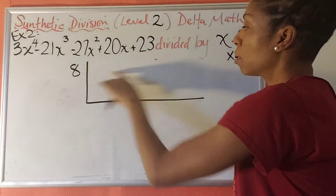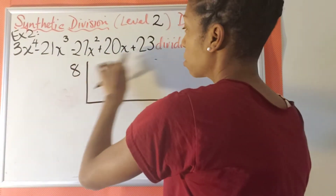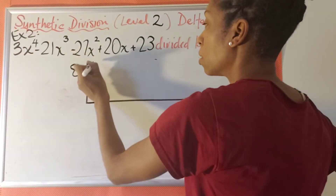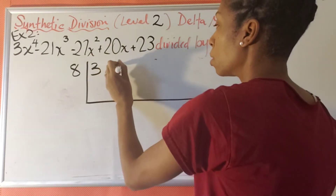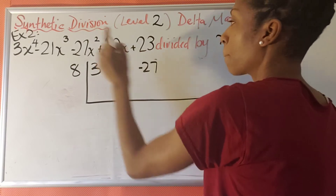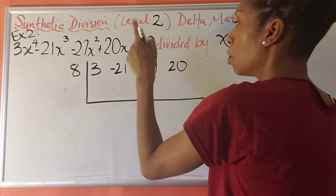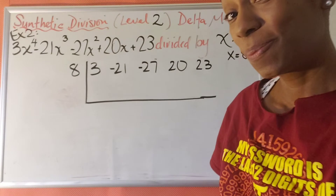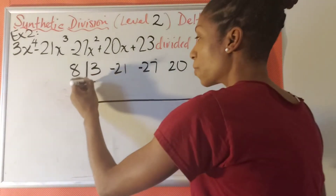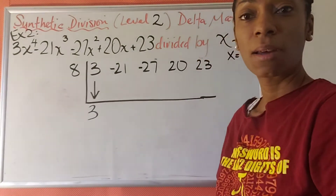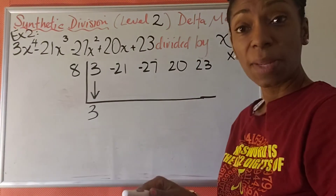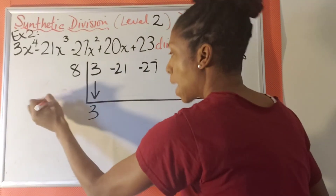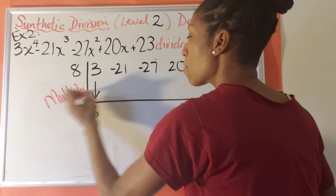And what do we put here? All of our coefficients. We have 5 terms, so five numbers are going to go here. First number is 3, then negative 21, then negative 27, then positive 20, and then positive 23. Bring down the first number, and then we're going to start the process of multiplying then adding, repeating that pattern.